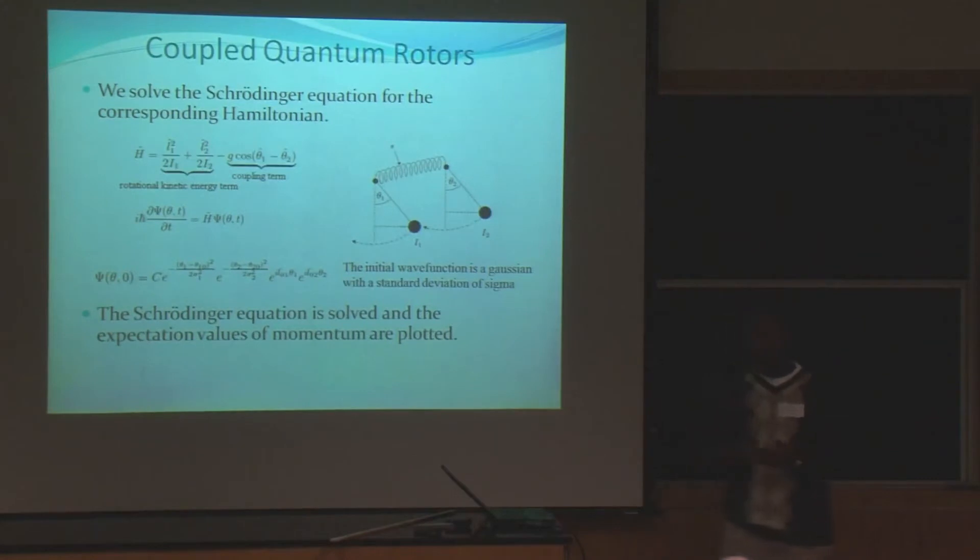Now, of course, I want to study the quantum behavior. So what we did was we took the Hamiltonian for a system of nonlinearly coupled rotors. We used the Schrödinger equation. This is the initial wave function we started with. Basically, both of our rotors are Gaussian packets, so we chose the standard deviation, initial momentum, and initial angle. We solved the Schrödinger equation and plotted the expectation value of angular momentum with respect to time to search for the signs of measure synchronization.